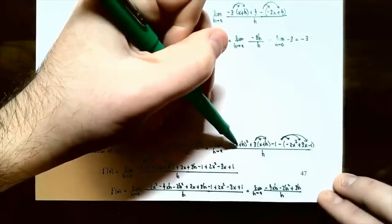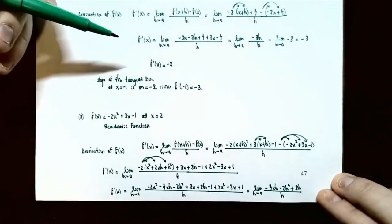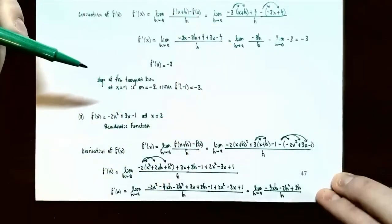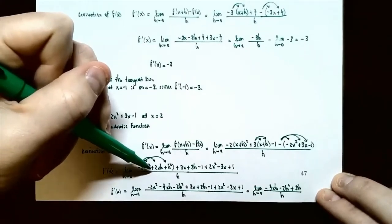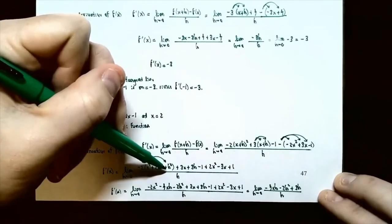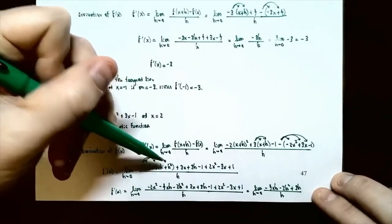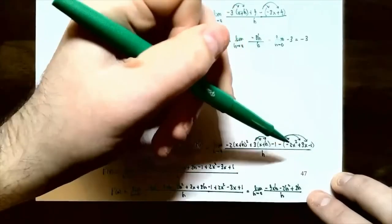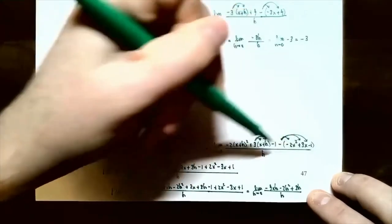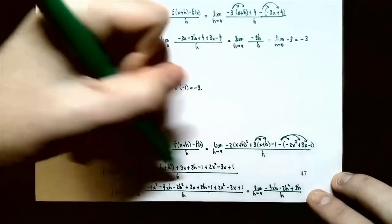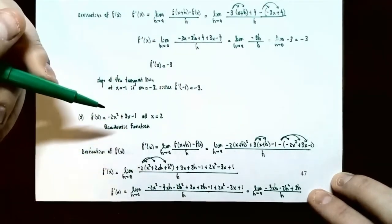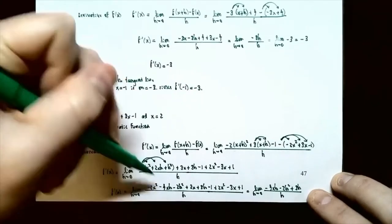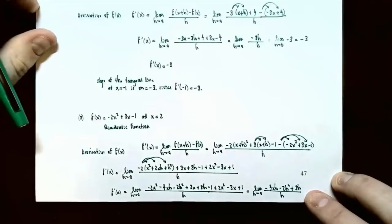To calculate x plus h all squared, use FOIL: x plus h times x plus h gives x squared plus 2xh plus h squared. So f prime of x is the limit as h goes to 0 of: negative 2 times the quantity x squared plus 2xh plus h squared, plus 3x plus 3h minus 1, plus 2x squared, minus 3x plus 1, all divided by h. Distribute the negative 2 through the first set of parentheses to get negative 2x squared minus 4xh minus 2h squared.